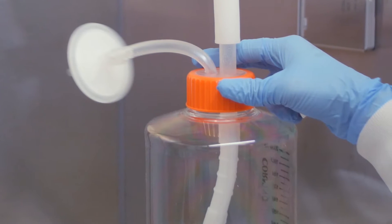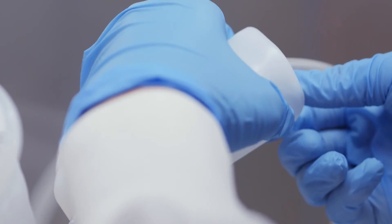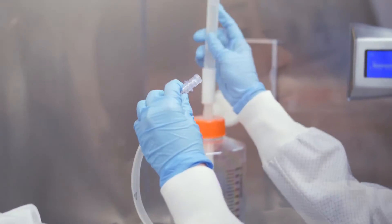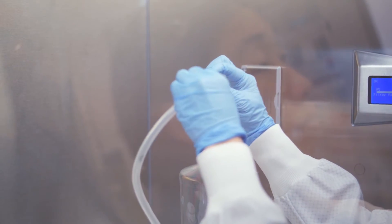Connect the transfer cap to the receiving vessel. Open the clamps on the transfer cap and the receiving vessel. If you are using a peristaltic pump, connect the pump tubing to the tubing on the transfer cap.